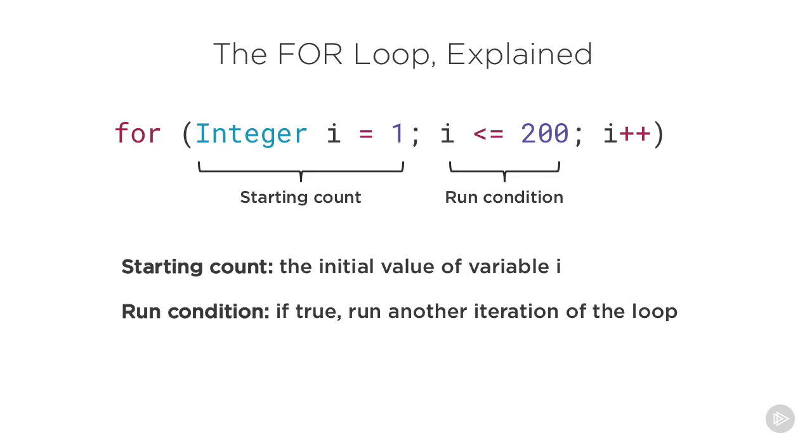Next we set the run condition. As long as this condition evaluates to true, your loop will run its next iteration. You set this condition less than or equal to the number of times you want your loop to run. So in this case, we want our loop to run exactly 200 times. So we say, keep running this loop as long as i, the iteration variable, is less than or equal to 200.